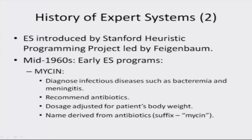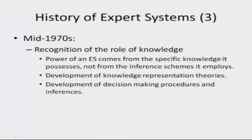Expert systems were introduced by the Stanford Heuristic Programming Project led by Feigenbaum, who is often referred to as the father of expert systems. The Stanford researchers tried to identify domains where human expertise is highly valued and complex — for example, diagnosis of infectious diseases. Then came the advent of Mycin. In the mid-1960s, early expert system programs emerged; Mycin was used to diagnose infectious diseases such as bacteremia and meningitis, recommended antibiotic medicines, and adjusted dosage for patients' body weight. Its name was derived from antibiotics whose names often carried the suffix '-mycin.'